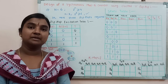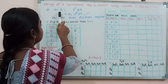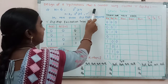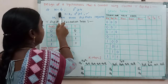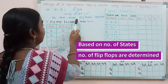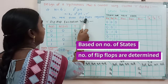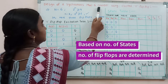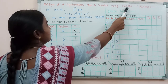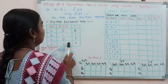Now we will see the design process of this mod 6 synchronous counter. The number of states is N equal to 6. Based on this, the number of flip flops is found to be n equal to 3 using the equation 2^n ≥ N. In this design procedure we use T flip flops, so we require the T flip flop excitation table.